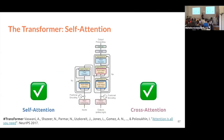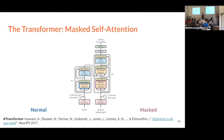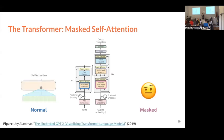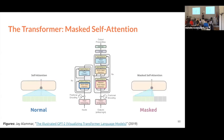We arrived at this point where we know the difference between self-attention and cross-attention. Now we need to talk about normal attention and masked attention. The blue self-attention block here is normal self-attention — what we already know. But there is also a masked version. Masked self-attention restricts attention to only look at the same time step or previous ones — it only allows picking information from words to the left of the current one.